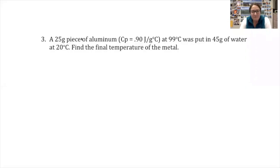Next question. A piece of aluminum, specific heat 0.9 at 99 degrees Celsius is put into 45 grams of water at 20 degrees Celsius. We're going to find the final temperature of the metal. This is a heat loss, heat gain type problem.